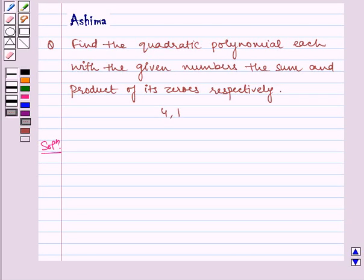Hello and welcome to the session. Let us discuss the following problem today. Find the quadratic polynomial with the given numbers, the sum and product of its zeros respectively.